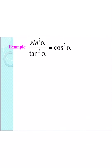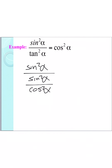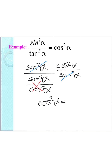For our next example, we're going to start with the left side again. I have sine squared of alpha over tangent squared of alpha. Using my quotient identity, I can rewrite tangent squared, so I have sine squared of alpha over sine squared over cosine squared. Instead of dividing by sine squared over cosine squared, I'm going to multiply by my reciprocal — cosine squared over sine squared. I can cross-cancel my sine values and I'm left with just cosine squared. So the left side transforms into cosine squared, and it equals cosine squared.